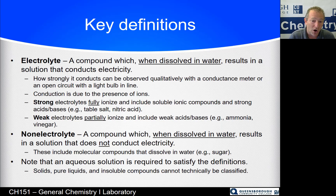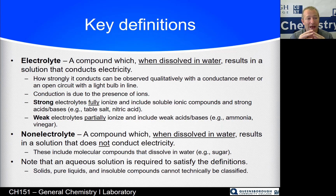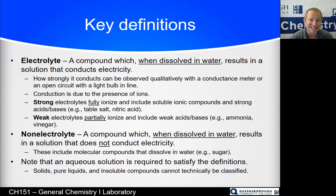A strong electrolyte is a compound which, when dissolved in water, fully ionizes — every single thing you throw in breaks apart into cations and anions. A weak electrolyte will only partially ionize; most of it will stay together as the molecule and not break apart into ions. A non-electrolyte doesn't ionize at all, but still dissolves in water. If it doesn't dissolve in water, it can't be classified.